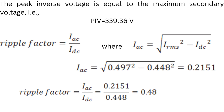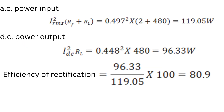Ripple factor is the ratio of Iac to Idc, where Iac = √(Irms² − Idc²). Substituting: Iac = √(0.497² − 0.448²) = 0.2151. Therefore ripple factor = Iac / Idc = 0.48.